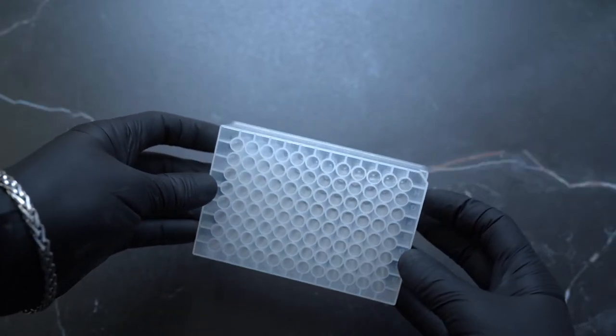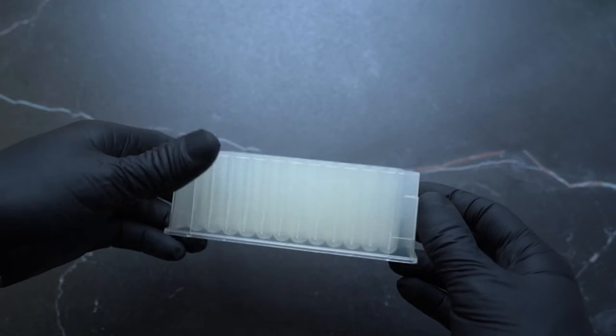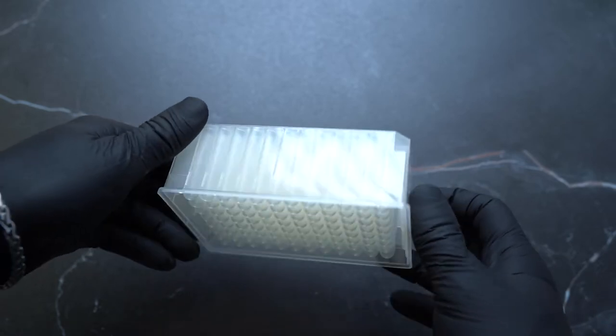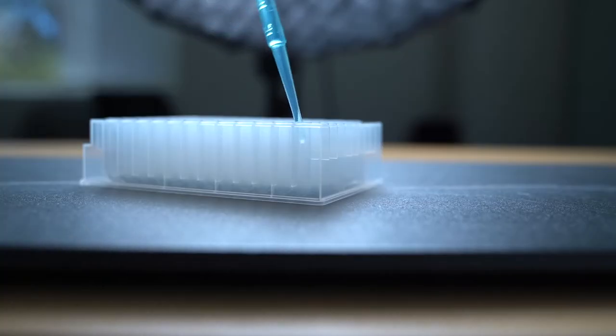96 deep well plates are for sample retrieval, mixing, and storage. We have both 1 mil and 2 mil round top and round bottom plates, depending on the size of the solution and your application. These also come in square tops.